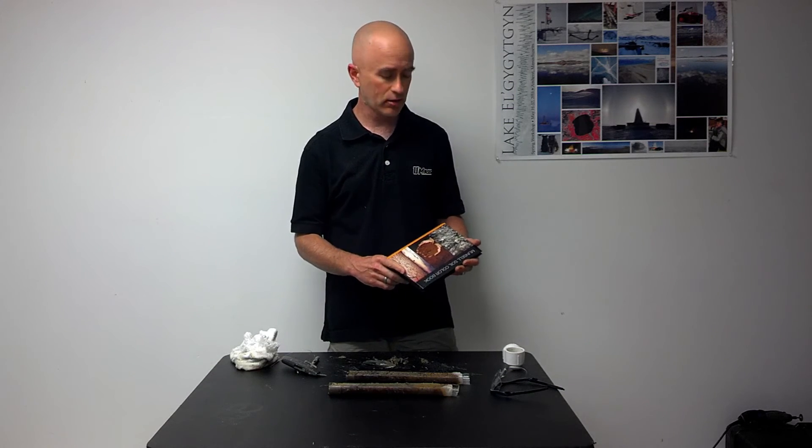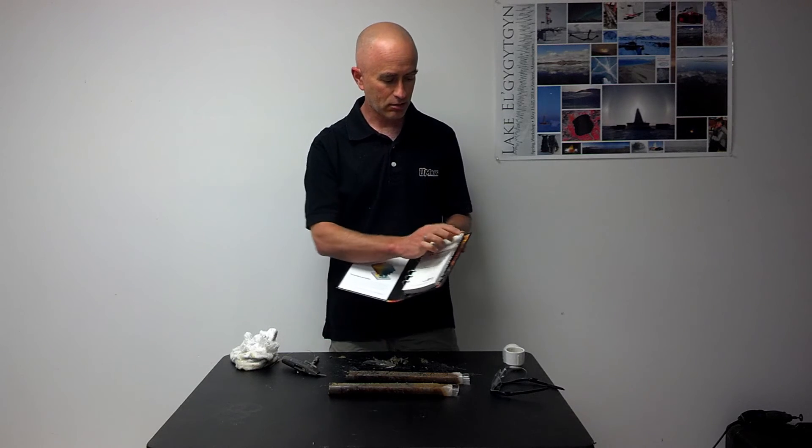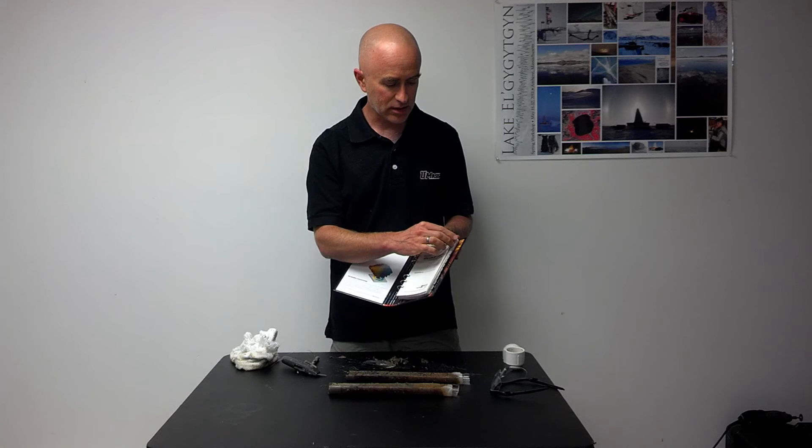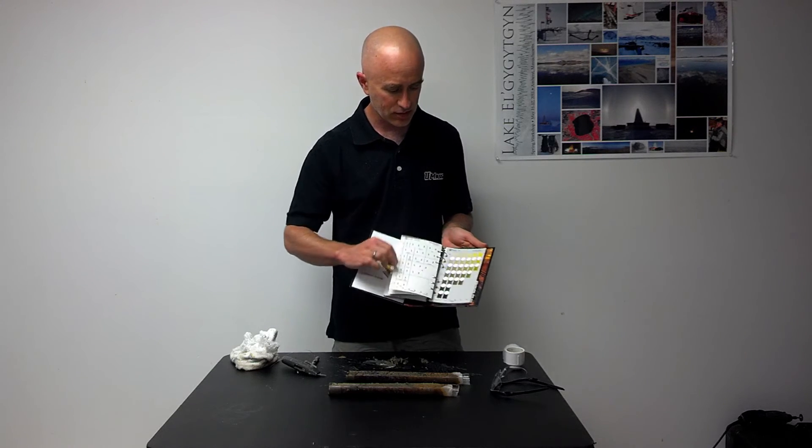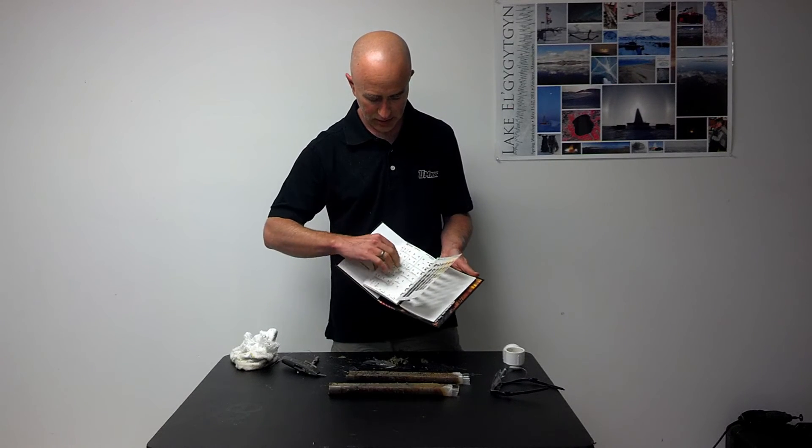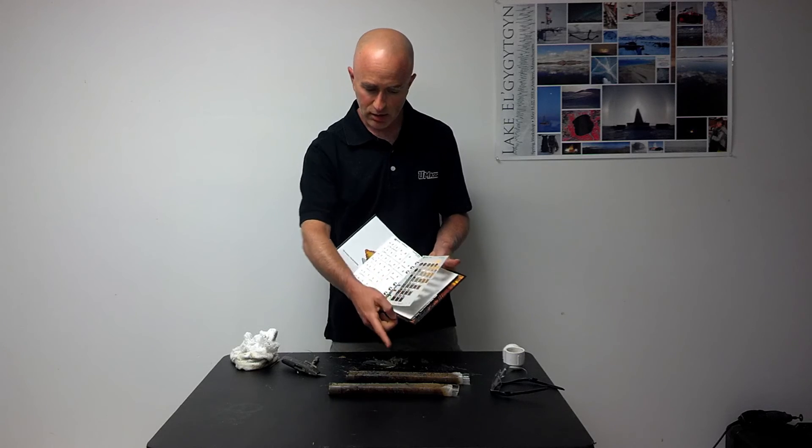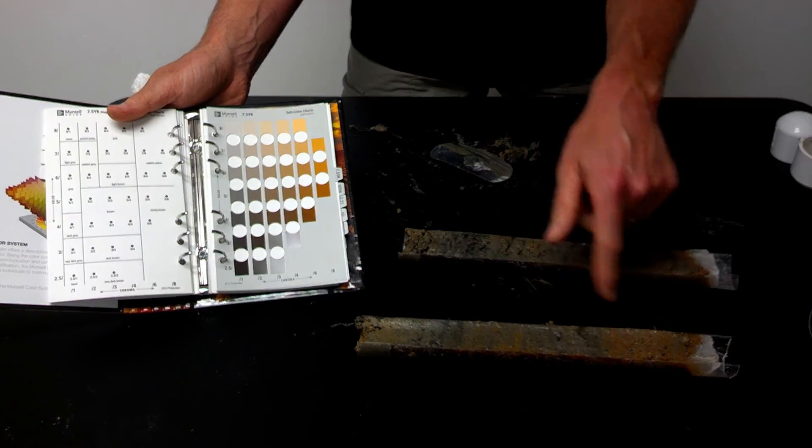There will be several things to do to analyze the sample. One is to get a color analysis using this Munsell color system. All the soils and sediments of the world may be in reds or maybe in a series of yellow colors. We want to find the color system that matches the sediments of this sample. This sample looks like it has some grays and oranges.